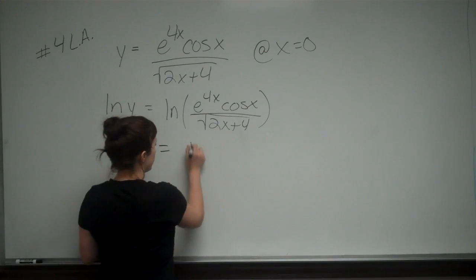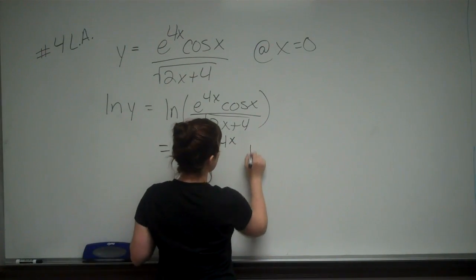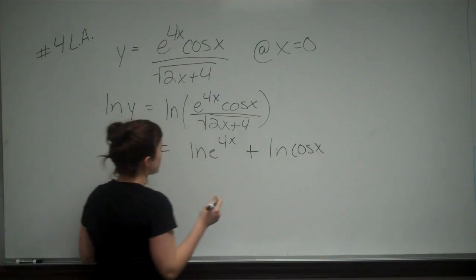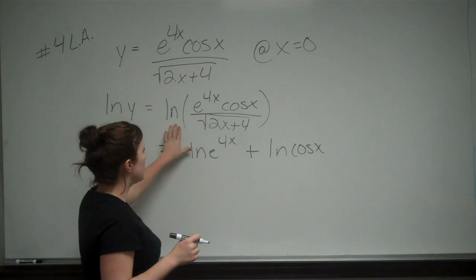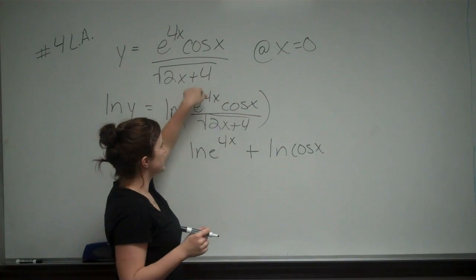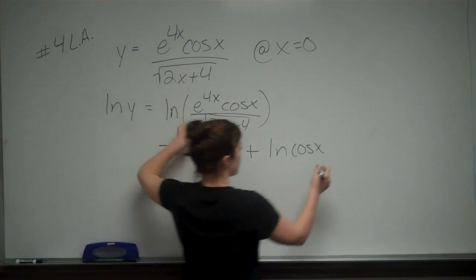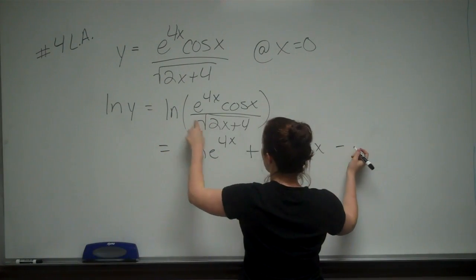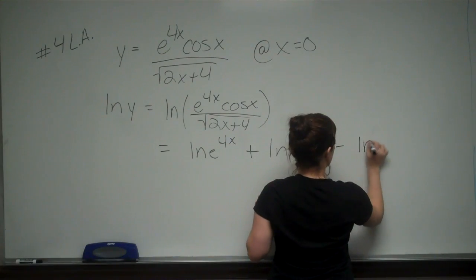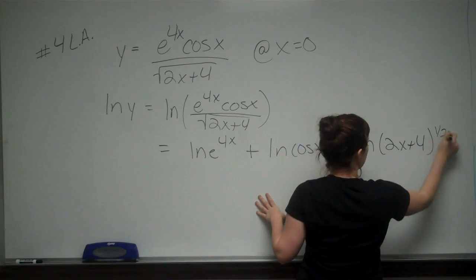So this is going to be equal to the ln of e to the 4x plus the ln of cosine x. Remember, going back to natural log properties: when we have the natural log of two things multiplied together, we add them when expanding, and then we subtract when we divide. So minus the ln of 2x plus 4 to the one half.